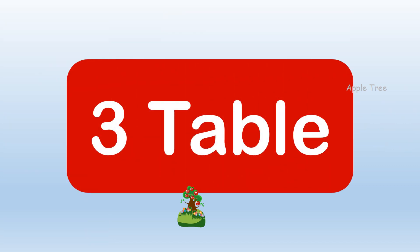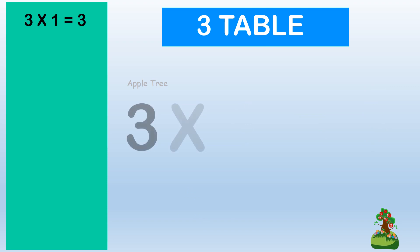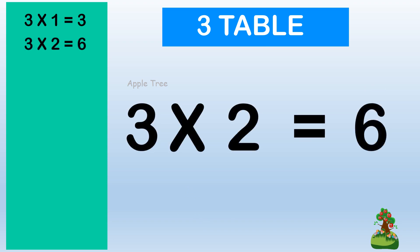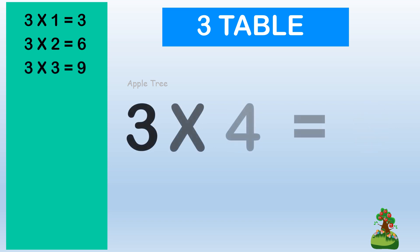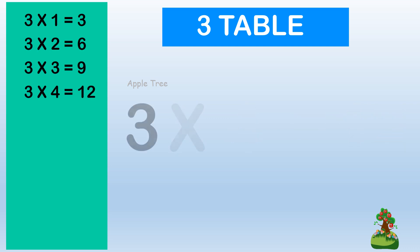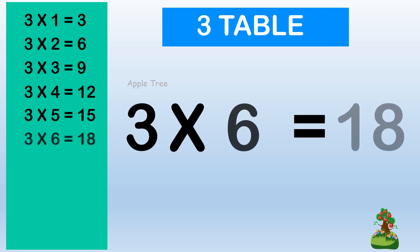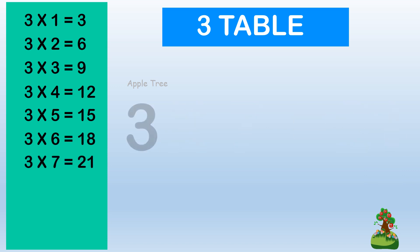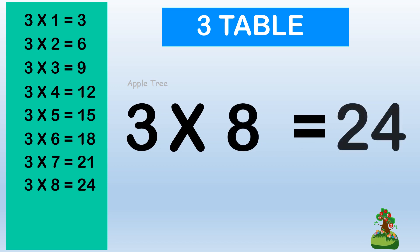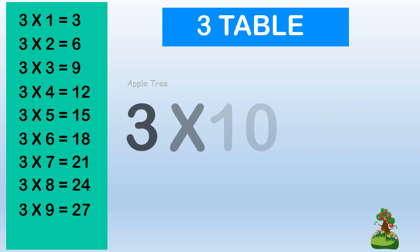Table for 3. 3 × 1 = 3, 3 × 2 = 6, 3 × 3 = 9, 3 × 4 = 12, 3 × 5 = 15, 3 × 6 = 18, 3 × 7 = 21, 3 × 8 = 24, 3 × 9 = 27, 3 × 10 = 30.